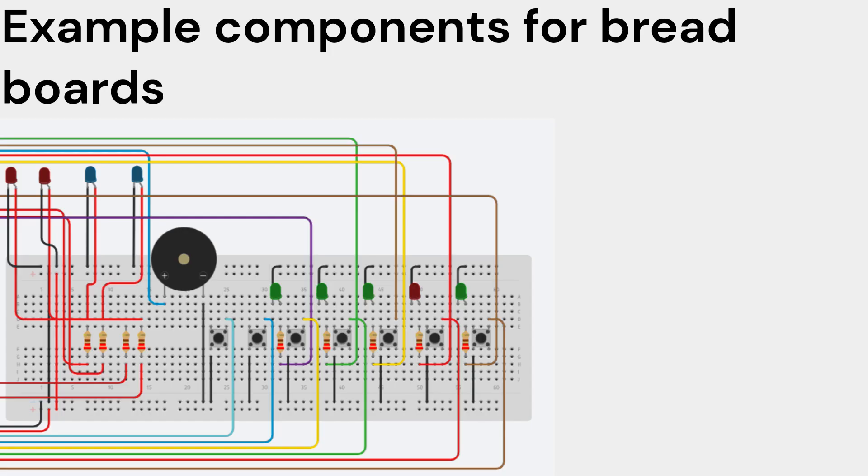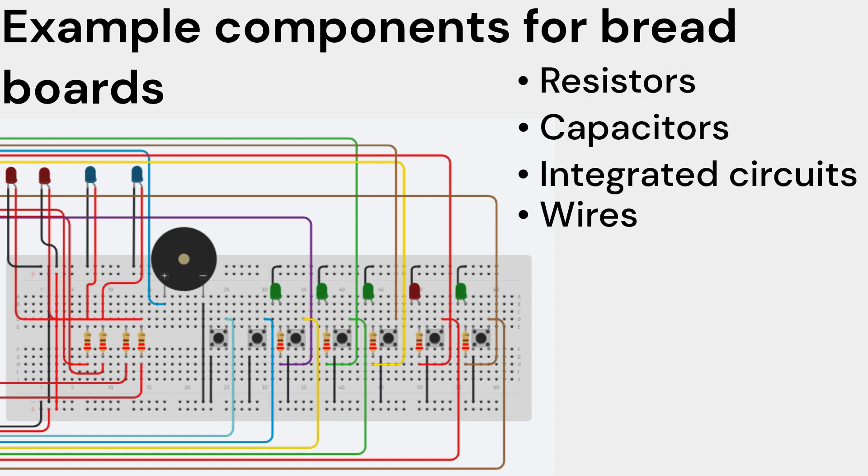To use a breadboard, electronic components such as resistors, capacitors, integrated circuits, and wires are inserted into the holes. The component leads or wires are placed into the desired holes, establishing electrical connections.